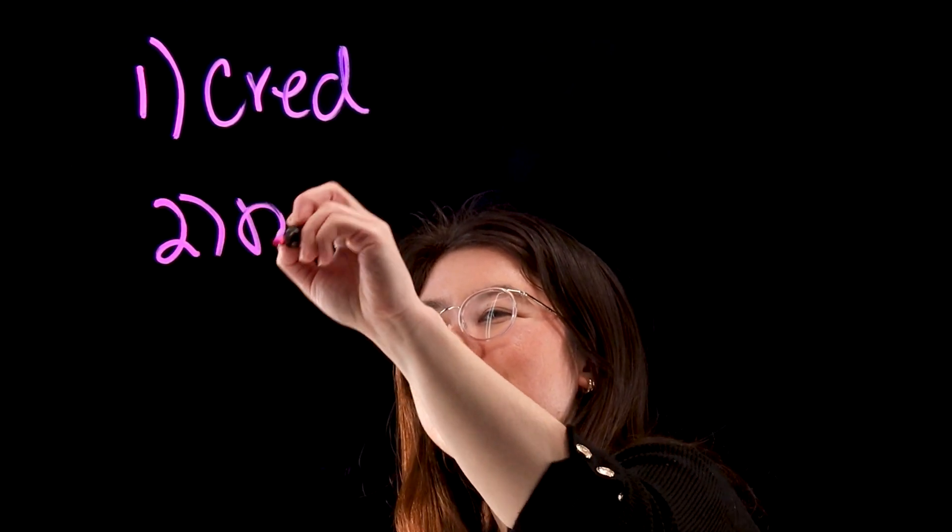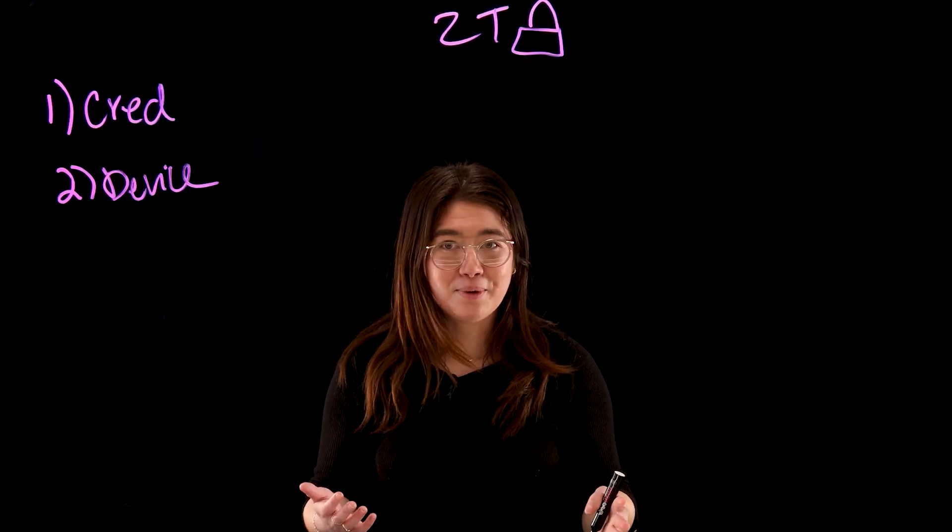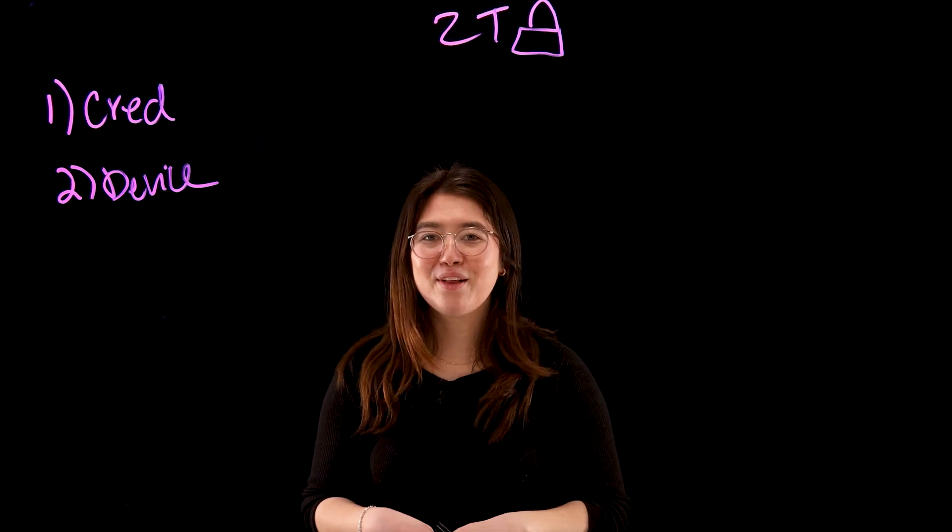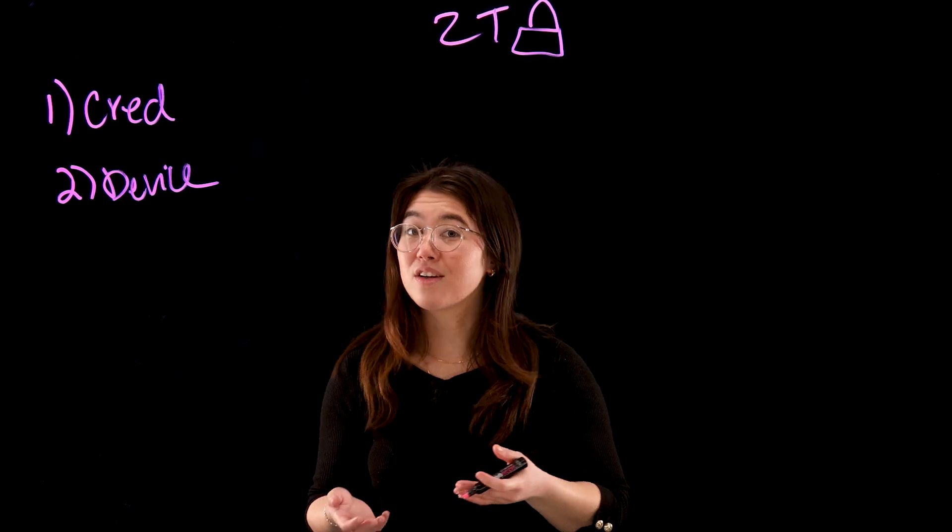Two, device exposure. Devices, by their nature, are just a more exposed endpoint. For example, because they rely on cellular signals instead of Wi-Fi, it's hard to ensure that the network they're using is secure.